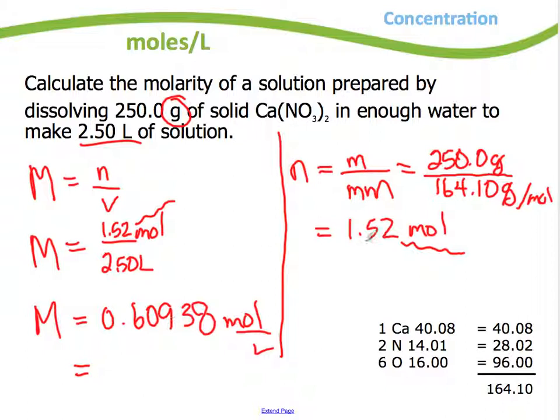You'll find some instructors like you to round off as you go. Some instructors like you to keep the number in your calculator until the very end. So just make sure you know from your instructor which way they prefer. Myself, I only round at the very end. So I had 4 sig figs, 3 sig figs. I need to round to 3. 0.609 moles per liter. So let's determine the concentration in molarity.